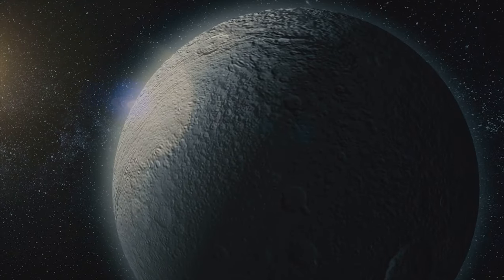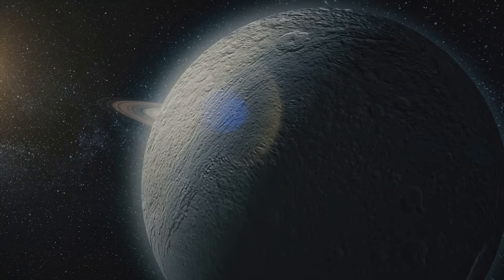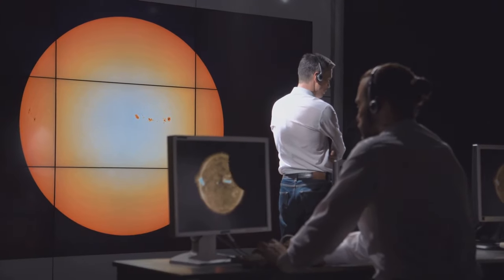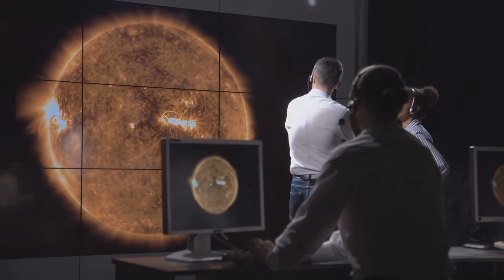This method relies on the fact that a planet's gravity tugs on its star, causing the star to wobble slightly. By carefully measuring the light from the star, astronomers can detect these tiny wobbles and infer the presence of a planet.